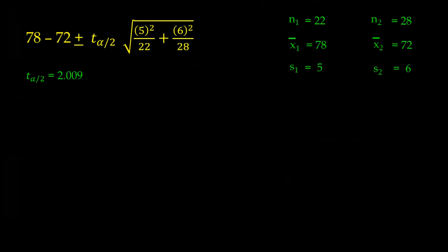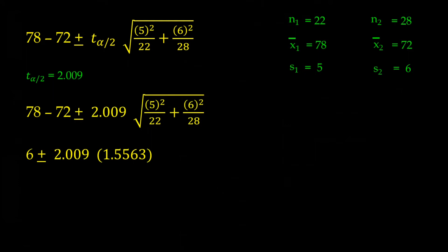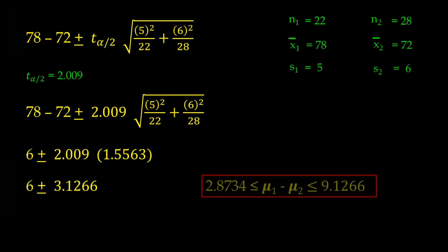Back to our equation, plugging in 2.009 gives us 6 plus and minus 2.009 times 1.5563, which gives us 6 plus and minus 3.1266. Adding and subtracting gives us a lower and upper number for our 95% confidence interval. We are 95% confident that the true difference between mu1 and mu2 is somewhere between 2.8734 and 9.1266.